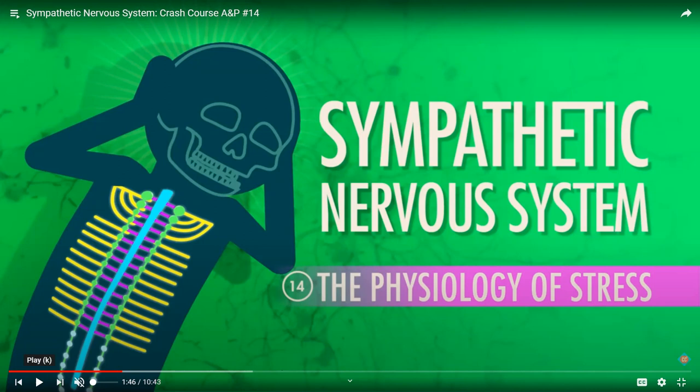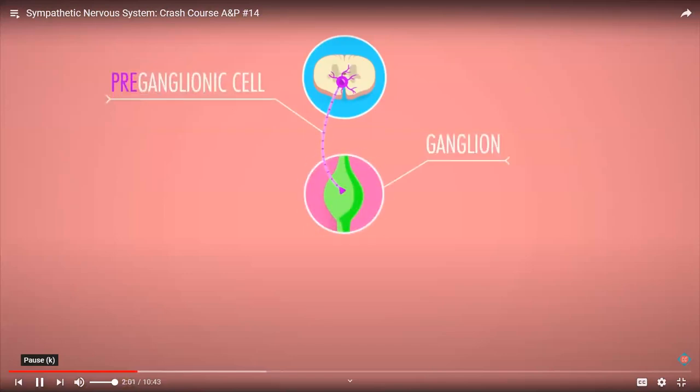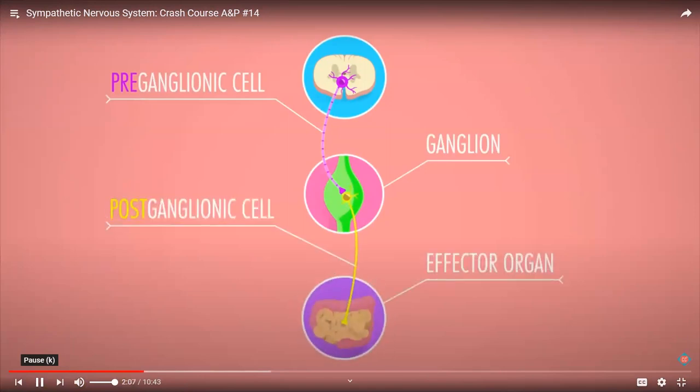In both your sympathetic and parasympathetic divisions, almost every signal has to cross two synapses. Each neuron travels from its root in the spinal cord to a ganglion where it synapses with another nerve fiber, and that one in turn leads to an effector organ where it synapses again to create the response — like sending more blood to your skeletal muscles or making your heart pump faster.